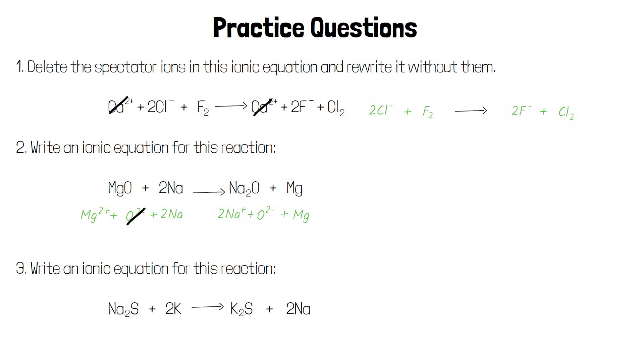We have oxide ions on both sides of the equation so we can cross them out. If we rewrite the equation without them we have Mg2 plus and 2Na produce two Na plus ions and Mg.